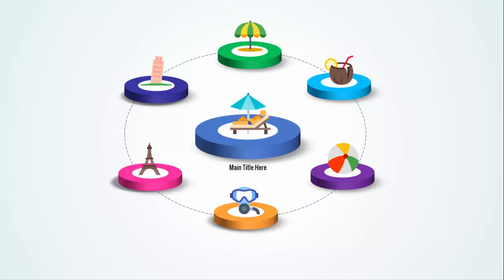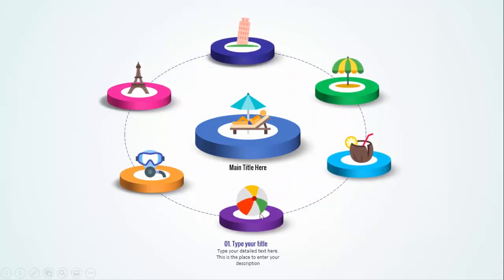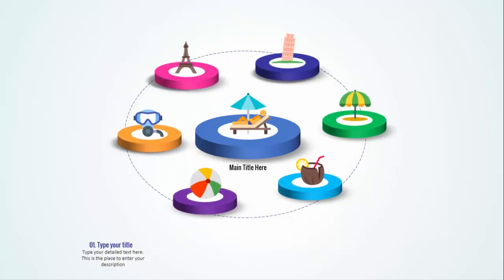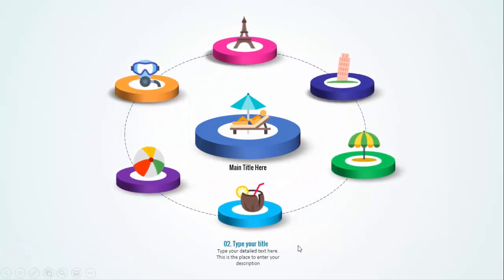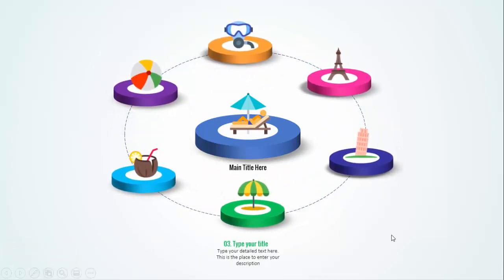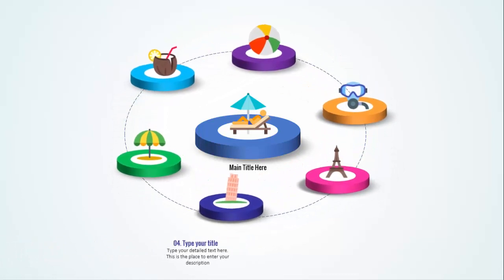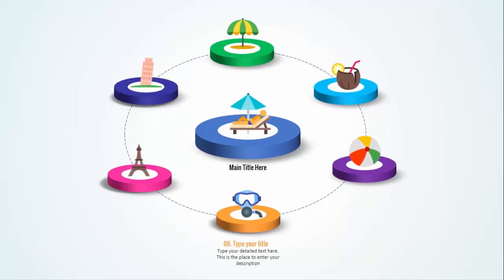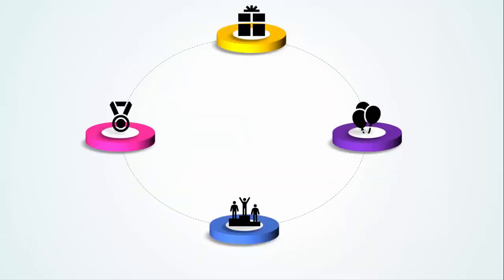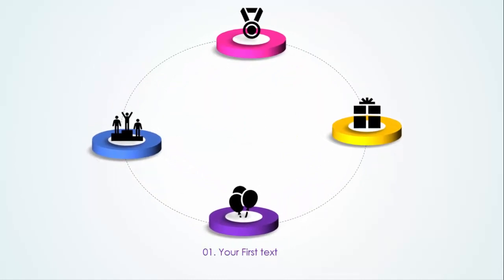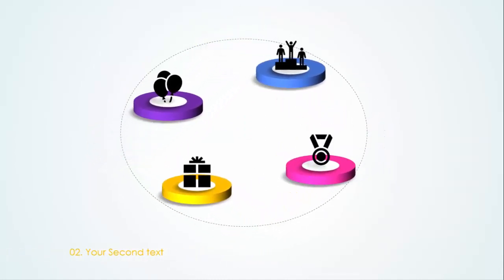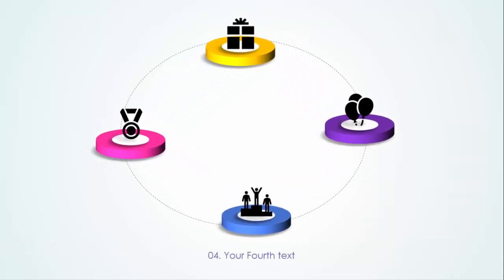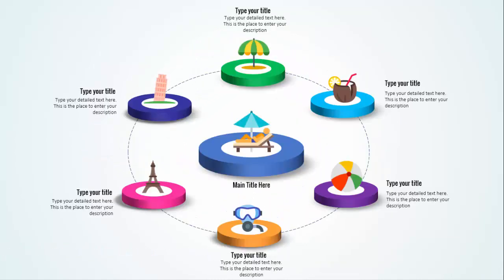When I click, the slide moves — the first option will come down and your text will appear here with the title. When I click again, the text goes out and the second option comes down with the second title, then the third, fourth, fifth, and sixth title. I've also created a version with four options: first, second, third, and fourth.